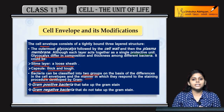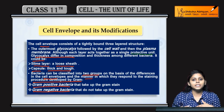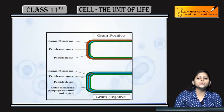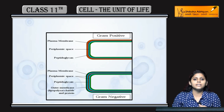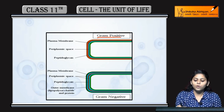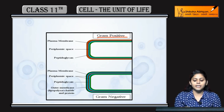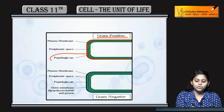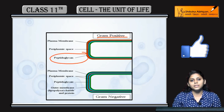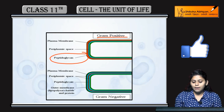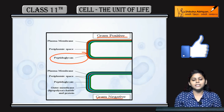Gram positive bacteria — 'positive' means they will take up the stain. Gram negative bacteria are those that do not take up the stain. Why does this happen? The gram positive bacteria have their outermost layer made of peptidoglycan.